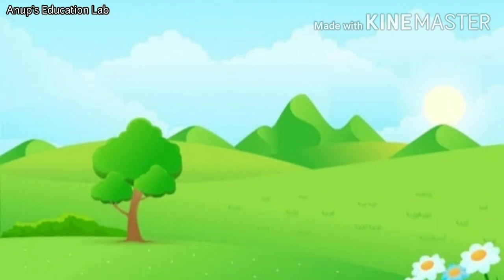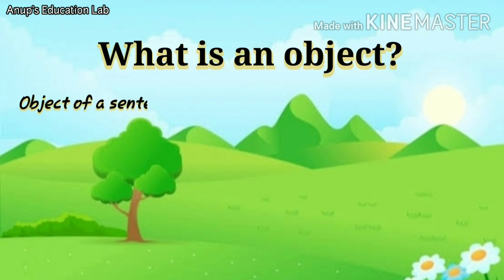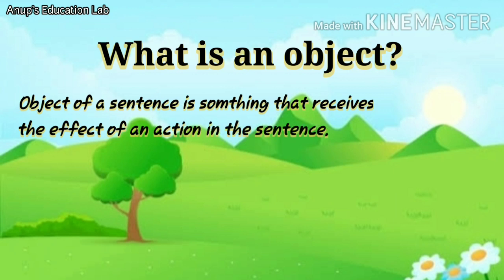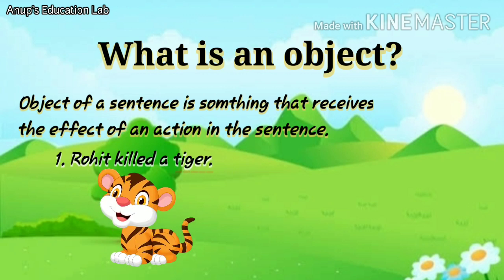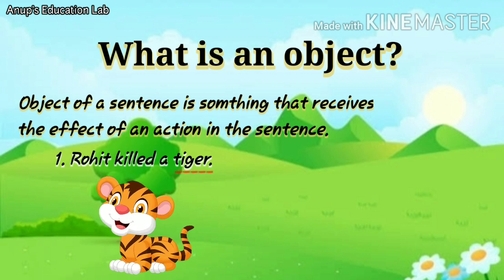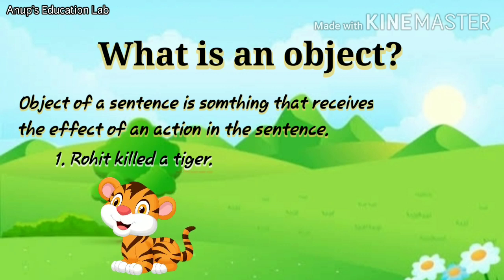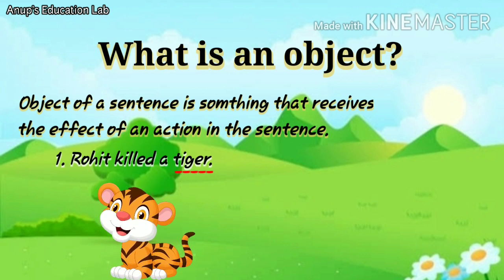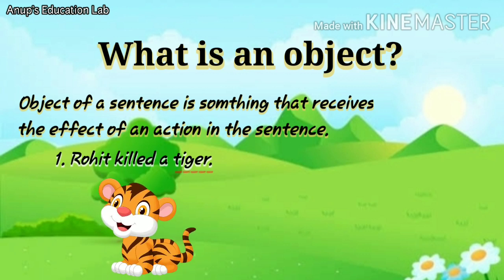Now, let us try to understand the object. Students, what is an object? Object of a sentence is something that receives the effect of an action in that sentence. That means when a subject does an action, an object receives the effect of that action. Let us see a few examples. Rohit killed a tiger. Here, tiger is an object as the tiger receives the effect of the action performed by Rohit. When Rohit does an action of killing, the tiger which was once alive dies. Death is the effect on the tiger.